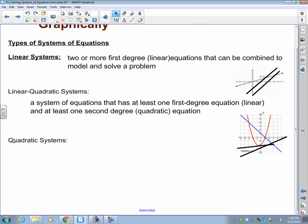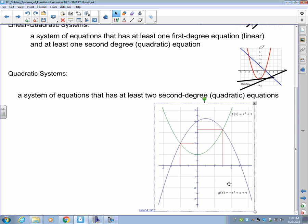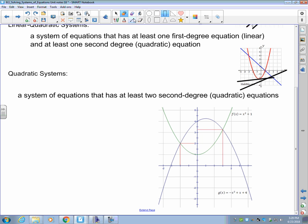And our third kind of equation would be a quadratic system. And just like a linear system where it's two or more first degree, a quadratic system has at least two second degree or quadratic equations. An example of that one. If you look at this one, you can see that this one has two solutions. We have a quadratic x² + 1 and negative x² + x + 4. So there are two solutions to this one. You could have a quadratic where you have one solution or no solutions. So it's good to recognize how many solutions you can have.